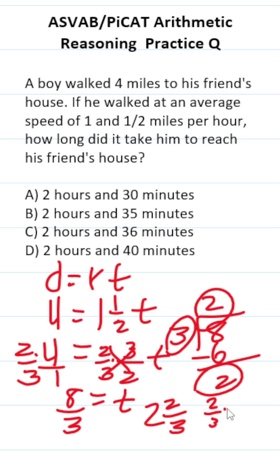We have to convert 2 thirds to be in terms of minutes by multiplying it by 60. This is going to be 120 over 3, which is the same thing as 40. So it took him 2 hours and 40 minutes to cover that distance.